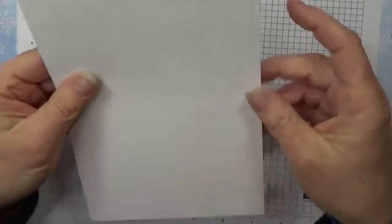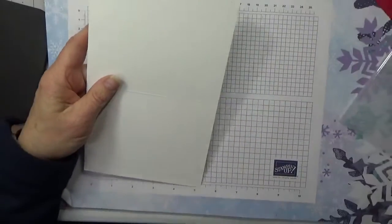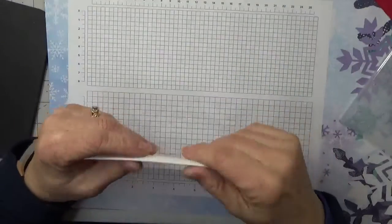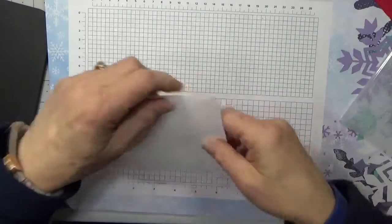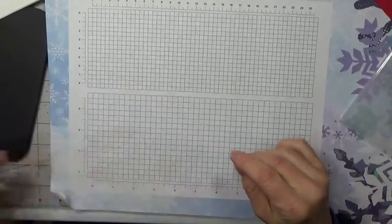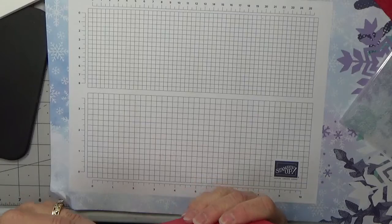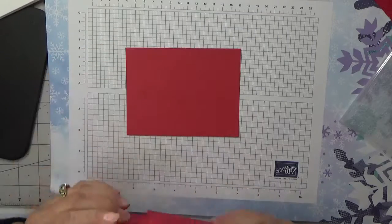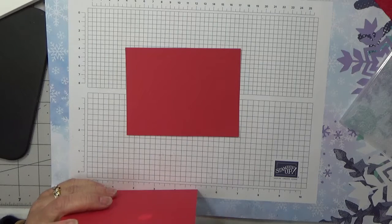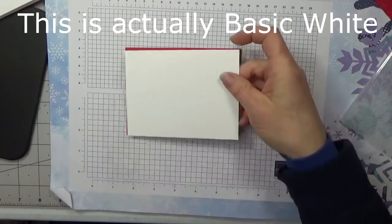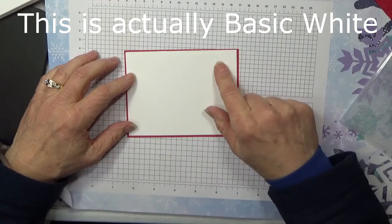What we need is a regular card base, eight and a half by five and a half scored at four and a quarter. We'll set that aside. We need a piece of real red cardstock that is five and a quarter by four, and then we need a piece of whisper white that is five and an eighth by three and seven eighths for our card front.